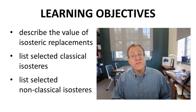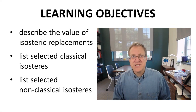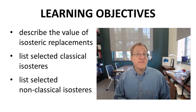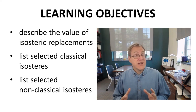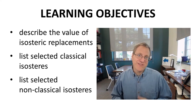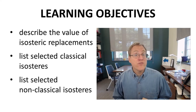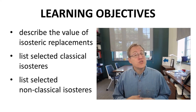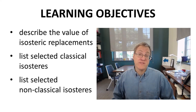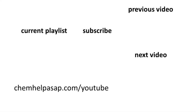We have described the reasons behind the use of isosteric groups. We have listed examples of classical isosteres, which are designed to imitate the shape and size of another group, and non-classical isosteres, which duplicate hydrogen bonding and charge properties. Thank you for watching. Feedback and questions in the comments section are welcome and always read. Take care.